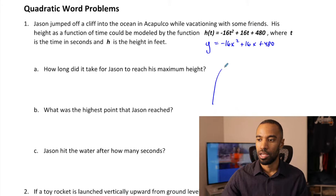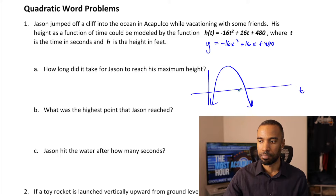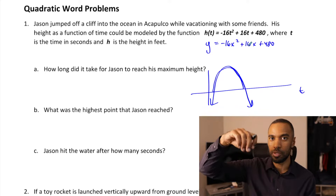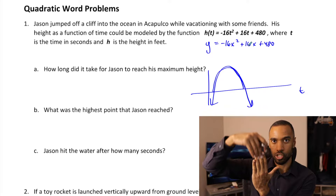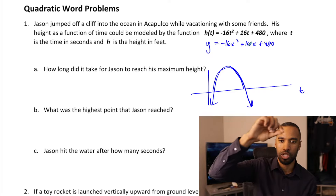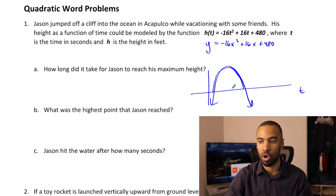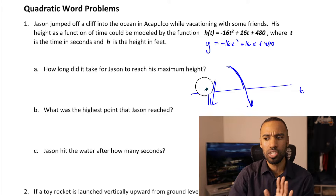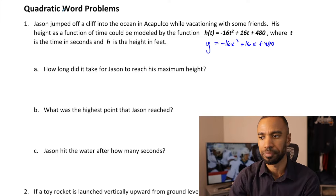Keep in mind that t is our x. Don't think of this as going to the right on a graph — Jason could be jumping straight up and down, or off a cliff into the water. This just means time is going onward and we're measuring heights at certain times. t is time in seconds, h is height in feet.